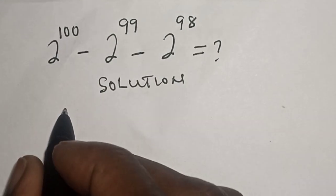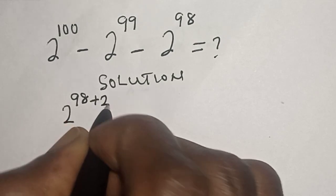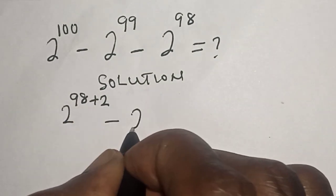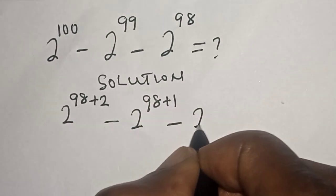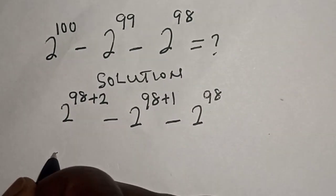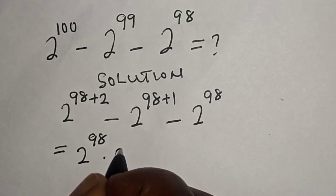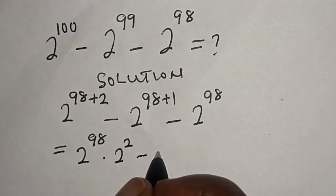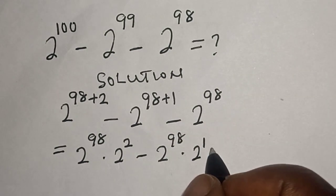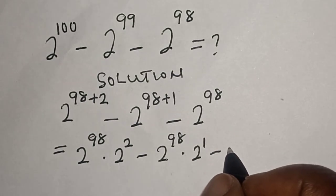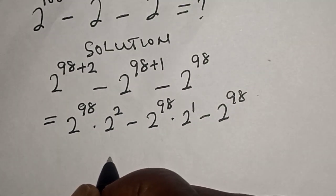2 raised to power 100 can be written as 2 raised to power 98 plus 2, minus 2 raised to power 99 which can be written as 2 raised to power 98 plus 1, minus 2 raised to power 98. This is equal to 2 raised to power 98 multiplied by 2 raised to power 2, minus 2 raised to power 98 multiplied by 2 raised to power 1, minus 2 raised to power 98.